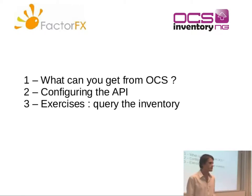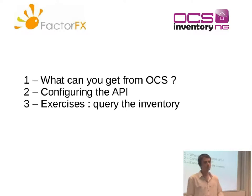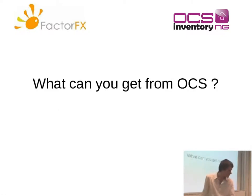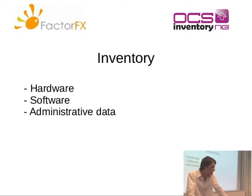During this talk I'll go through the following points. First, what kind of data can you get from OCS? Then I'll tell you a bit about how to configure the web services. And then we'll go through a few exercises to query your inventory and to keep up to date with it. So first — what can you get from OCS? The first important thing is the inventory, which is the main thing you want to get from the web services. You can get information about your hardware, your software, and your administrative data.